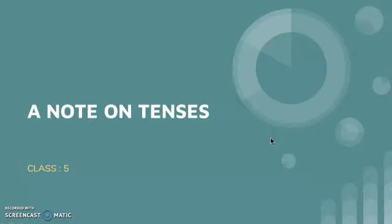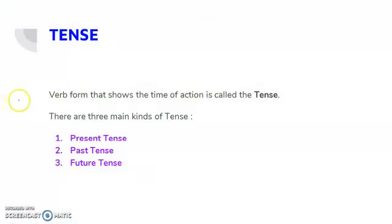So V1 form I am using to show the present time of action. V2 form 'went' for the past time of action. And to show the future time of action, we don't have different forms, so we are using V1 form by adding it with 'shall', that is the helping verb. The verb form that shows the time of action is called the tense. By tense, we can understand the correspondence between the form of the verb and our concept of time.